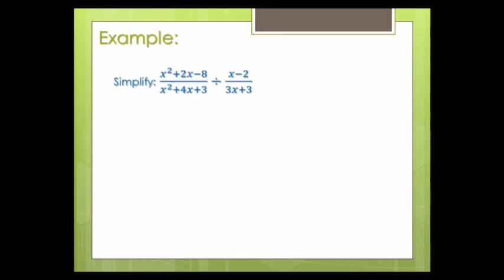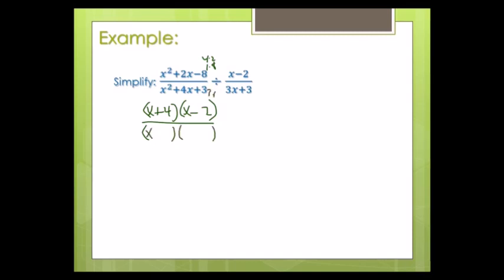Here I'm dealing with two fractions with a division sign between them, all groups. I'll combine steps one and two — factor and flip at the same time. The first numerator uses slide and divide, looking for factors of eight: four and two, with positive four and negative two to get positive two. The denominator factors as (x+3)(x+1) since everything is plus. It's division, so I change to multiplication and flip the second fraction.